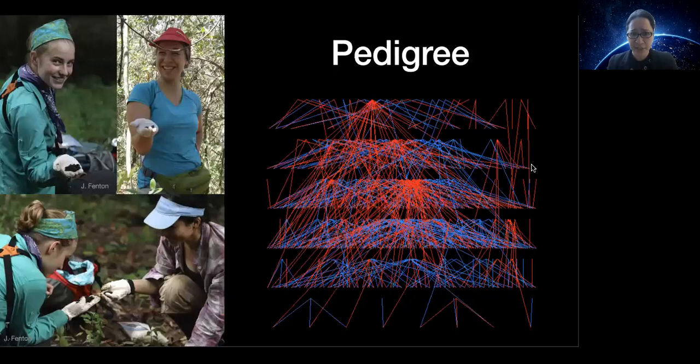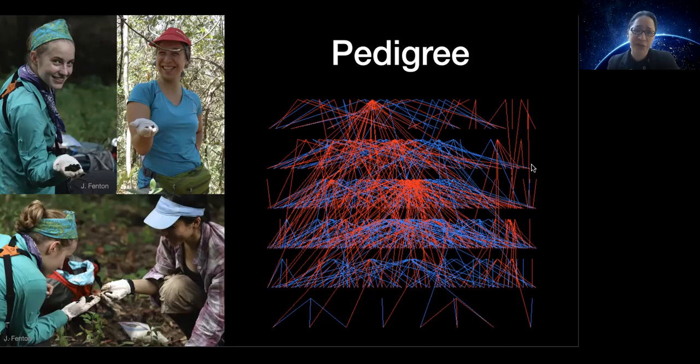Thanks to the non-invasive collection of fecal samples from which we later extract DNA, we know maternal and paternal links from most of the monkeys that are natal to our study groups. This is really wonderful genetic information with genotyping at up to 18 microsatellite markers. It allows us to confirm the identities of individuals' mothers and to assign paternities. For some individuals, we now have pedigree links going back six generations.